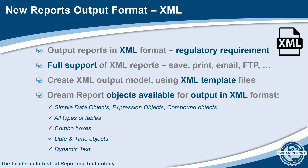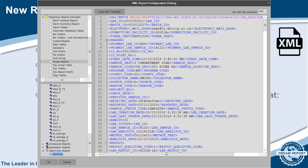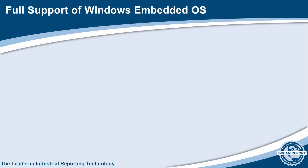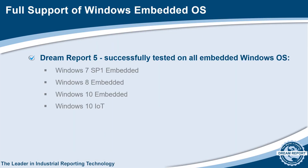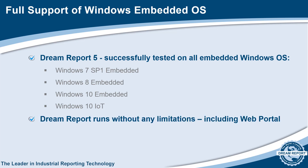Most DreamReport objects can be inserted into the XML output, and as we can see here, to configure the XML output, I've imported an XML template file and then I'll drag and drop report objects into the appropriate fields in the document — and that's it. In order to meet the needs of many of our OEM customers, version 5 has been fully tested on all embedded Windows operating systems. DreamReport runs without any limitations on these embedded operating systems, including the web portal.